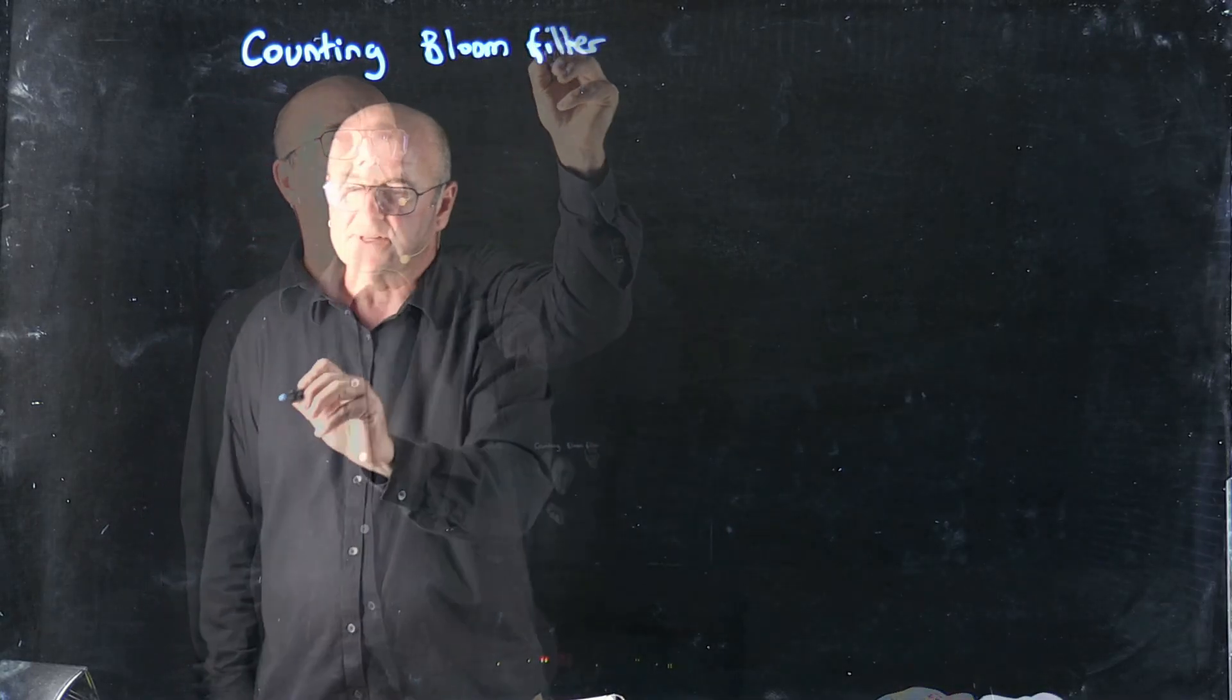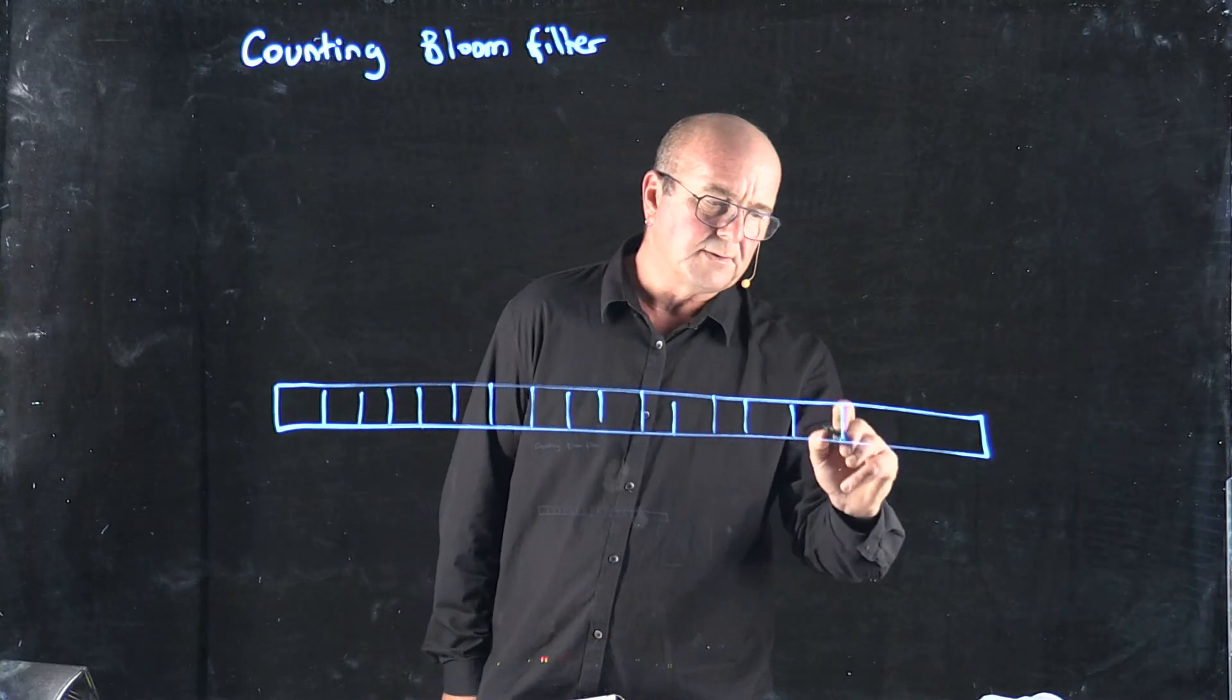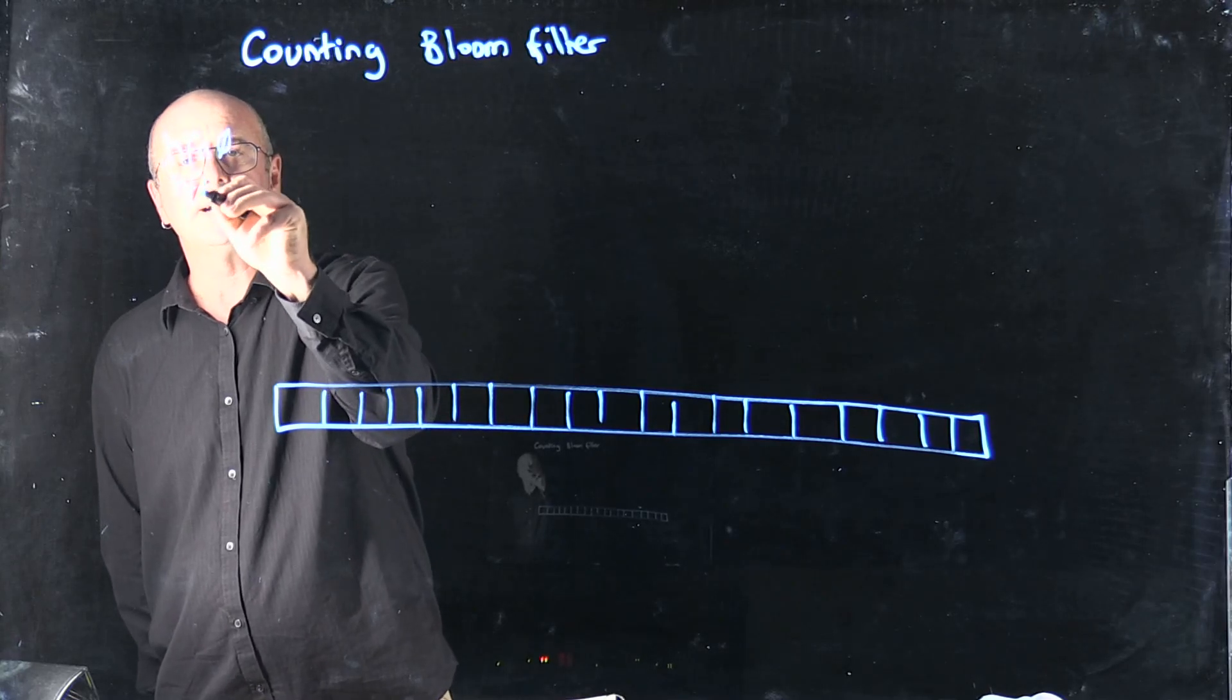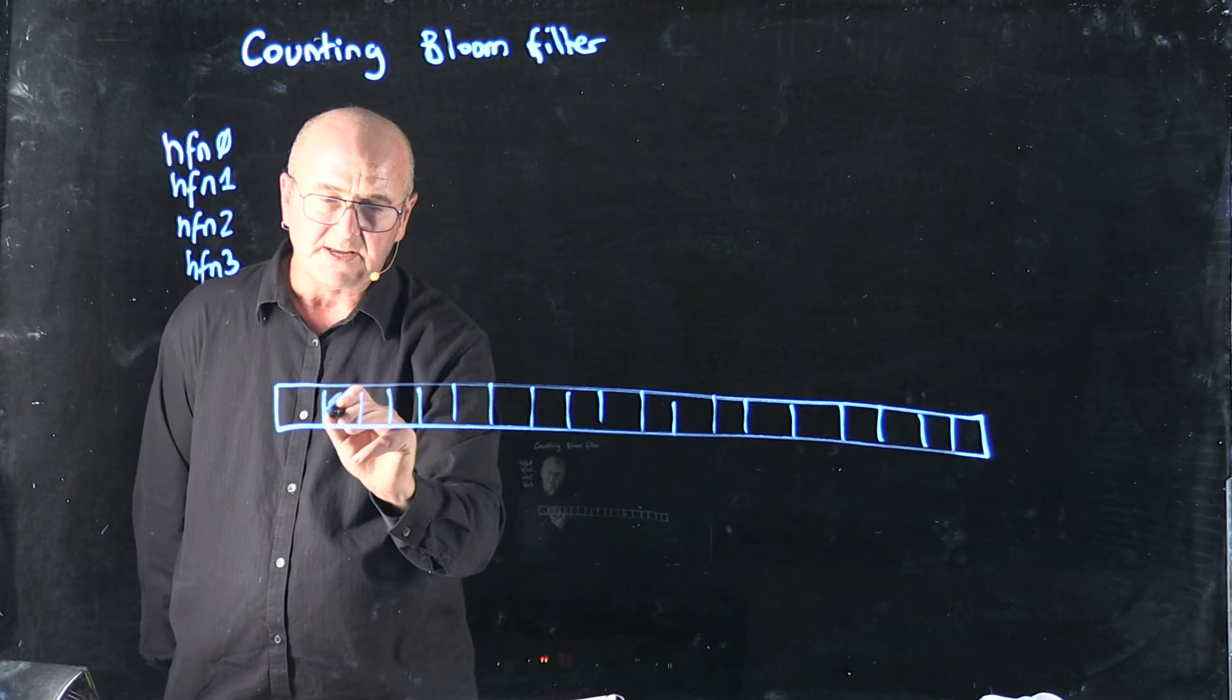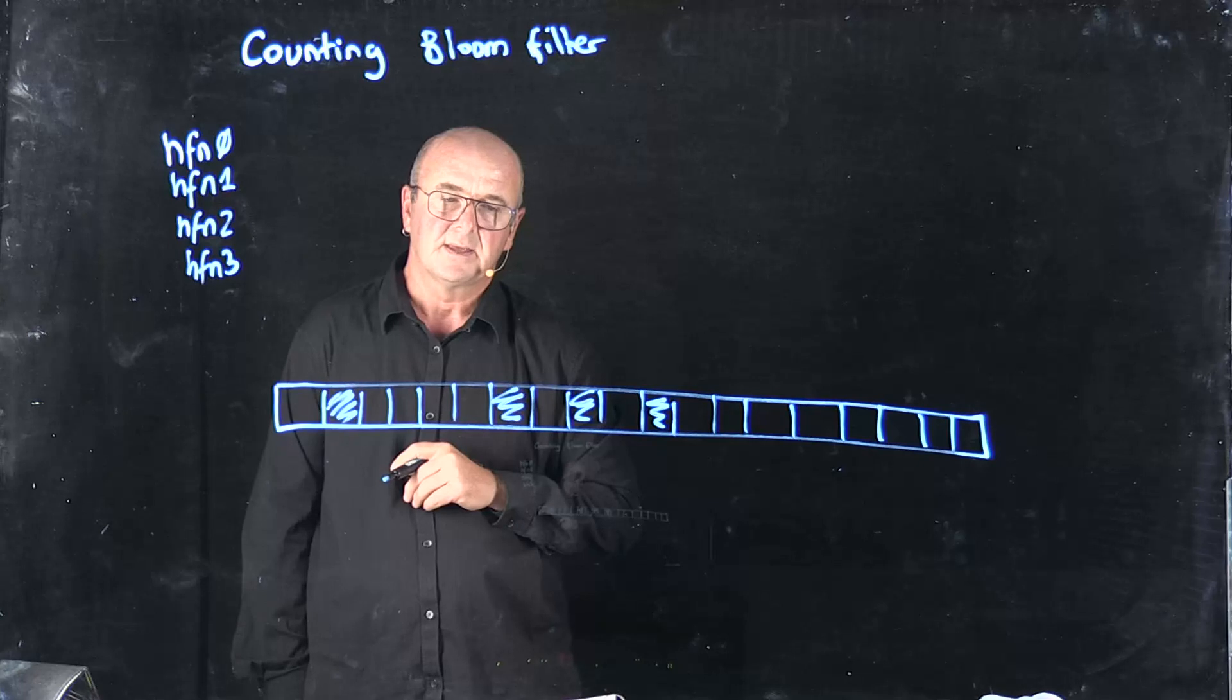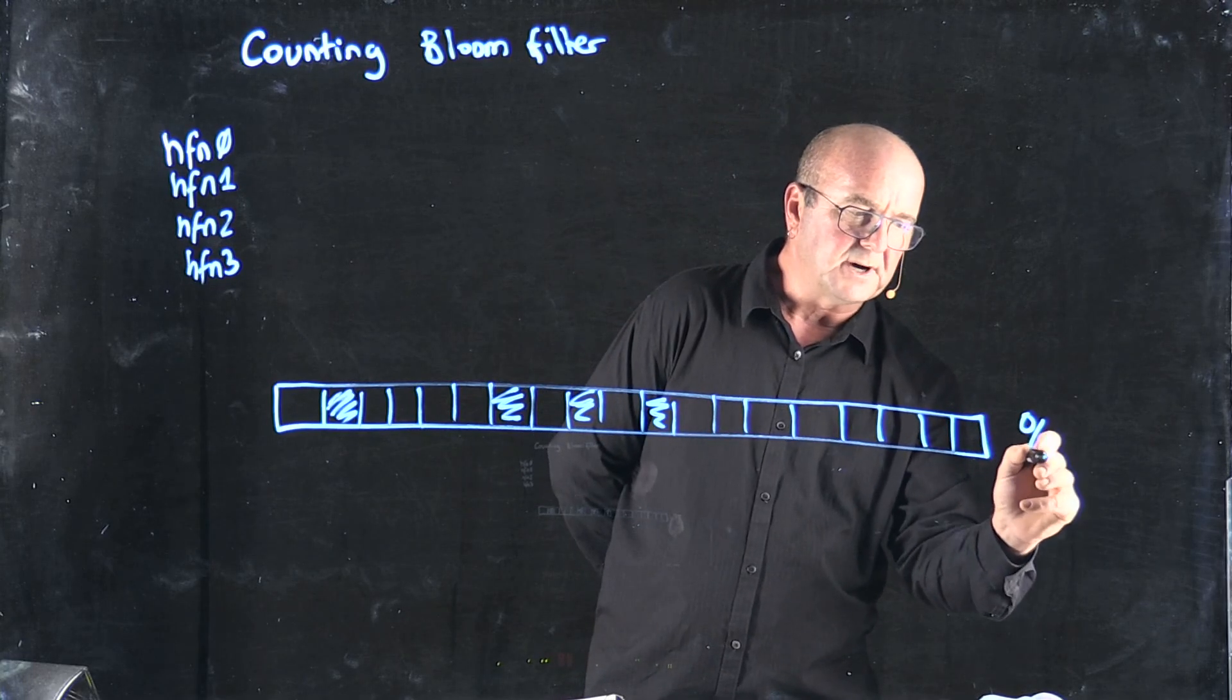Remember in our bloom filter we had an array of bits, our buckets, and when we pass our k-mer through our hash function, we've got multiple hash functions, we're going to set the bits appropriately depending on the values that we get back from our hash functions. In this case each of these bins is either a 0 or a 1.